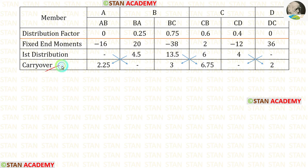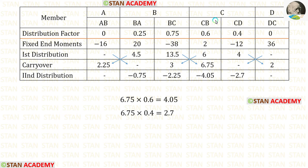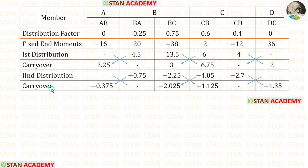Now let us do the carry-over by dividing the distributed values by 2 and entering the answers. For the second distribution at joint B, multiply the carry-over value by the distribution factors — giving positive values, entered as negative. For the second distribution at joint C, multiply by distribution factors — again positive values entered as negative. Then perform another carry-over by dividing by 2.